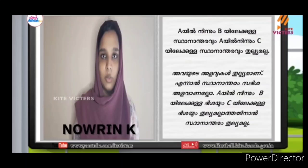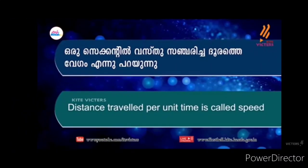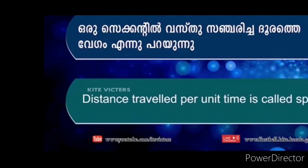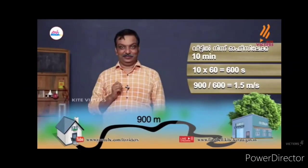Distance per unit time is called speed. What we need to say is one of the most important things. The distance in the office is 10 minutes. We will convert from seconds. Let's go through speed — convert from seconds. How do we calculate the speed? The formula is distance by time, not far by time.